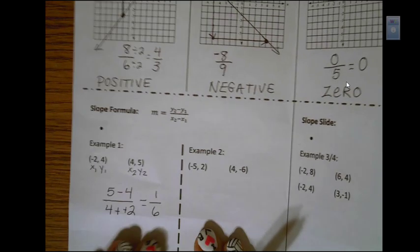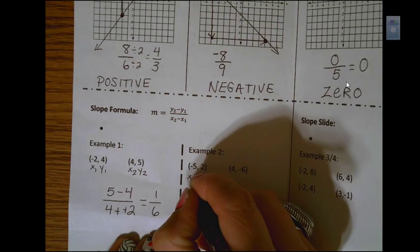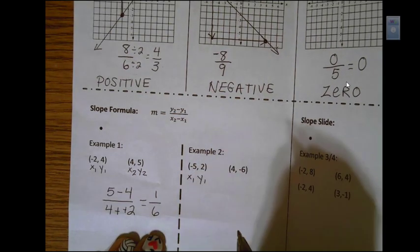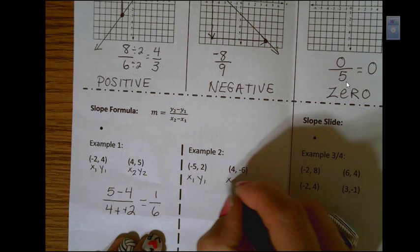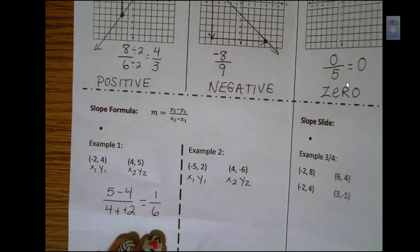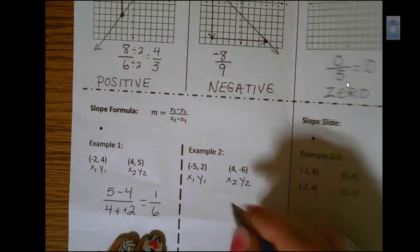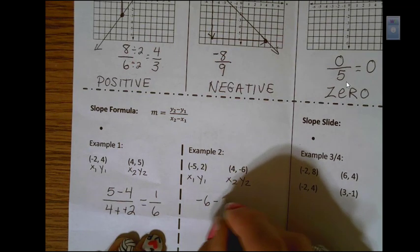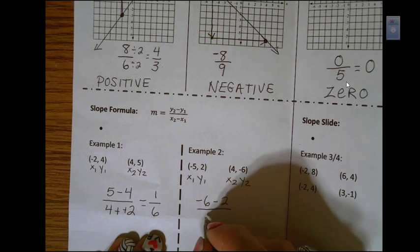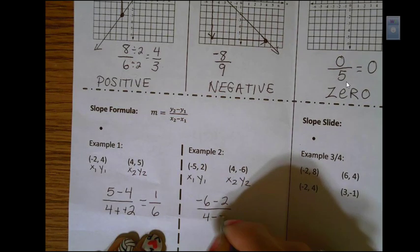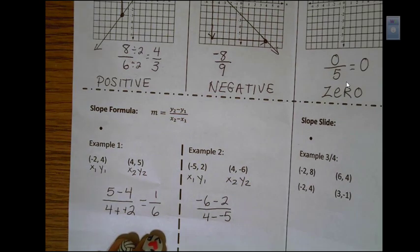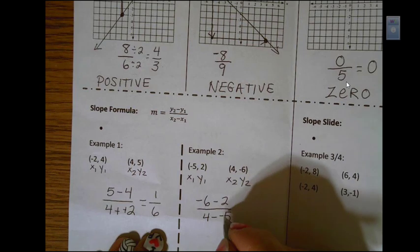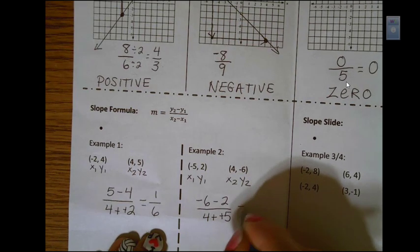Our second example, x1, y1 for the first ordered pair, x2, y2 for the second ordered pair. Substitute in. I get negative 6 minus 2 over 4 minus a negative 5. So anytime I see minus a negative, I'm going to change that right away to plus plus.